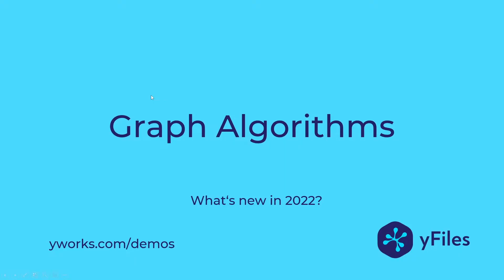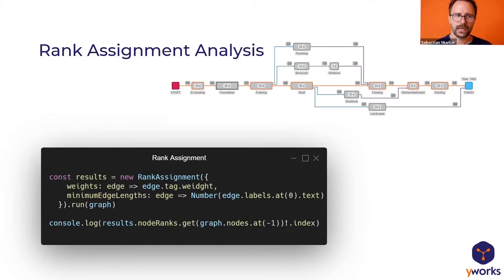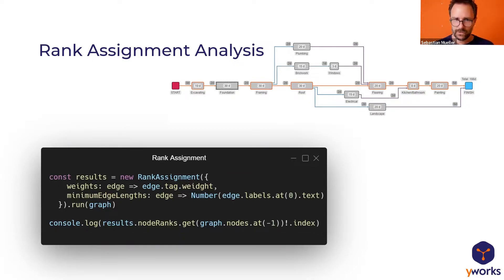The next topic is graph algorithms. There haven't been many new algorithms in this release, as our set is already quite large. But let's look at two new ones. A tool we have been using internally in our graph layout algorithms is the simplex rank assignment algorithm. With this release, we added it as a convenient API for customers to use. The results can be used to drive visualization or configure other layouts — for example, to calculate a critical path and highlight critical edges versus those with slack.